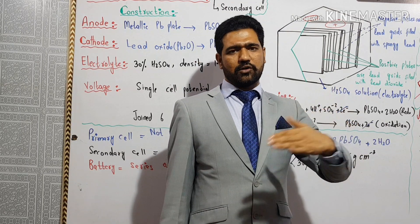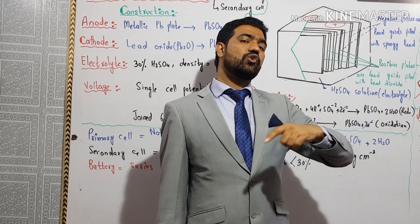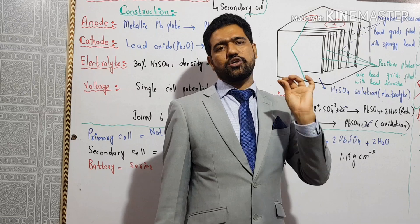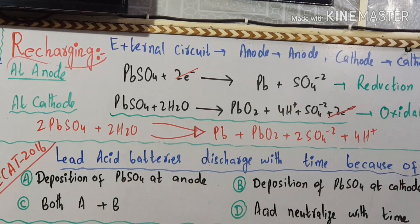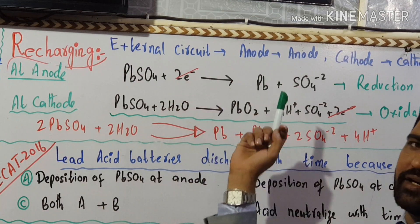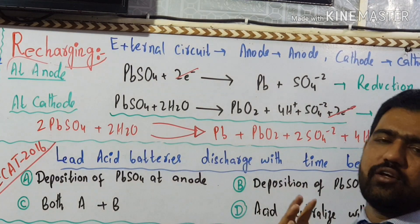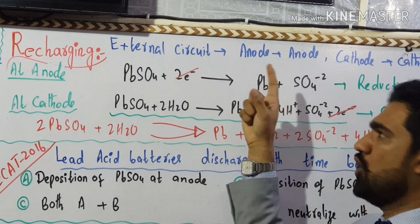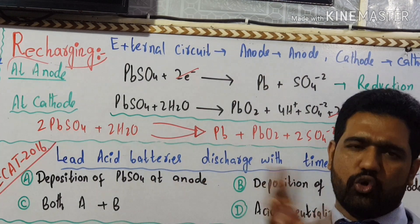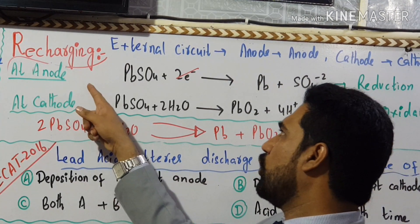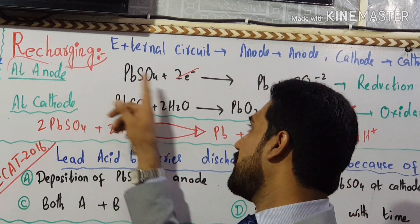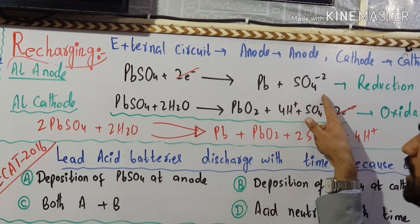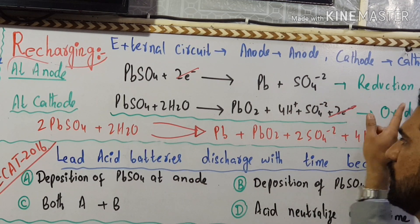After the battery has discharged, it needs to be recovered by recharging. To recharge, an external source is connected. The external source drives current through the battery — at the anode oxidation occurs, and at the cathode reduction occurs. Lead sulfate is broken down: electrons are released and lead and sulfate ions are recovered.